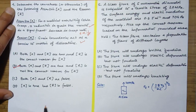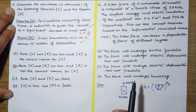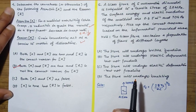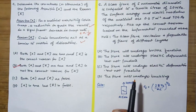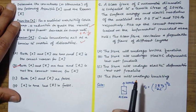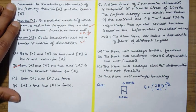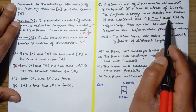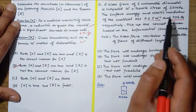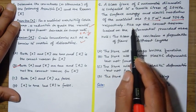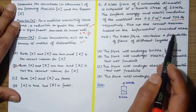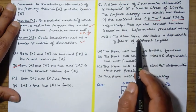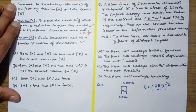Fifth question: A glass fiber of 5 micrometer diameter is subjected to a tensile stress of 20 MPa. The surface energy and elastic modulus of the material are 0.3 joule per meter square and 70 GPa respectively. Pick up the correct answer based on the information provided. Note: the glass fiber contains a population of flaws of different lengths.